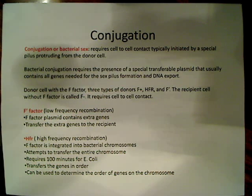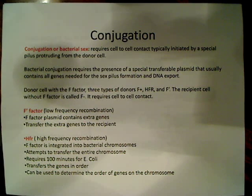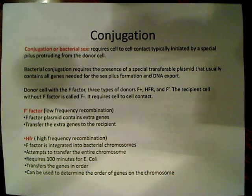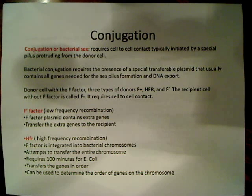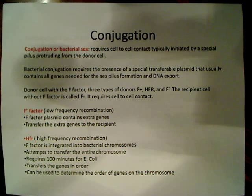I want to talk briefly about the F-prime factor. That's what's known as low-frequency recombination. The F-factor plasmid contains extra bacterial genes specifically. So they transfer these extra genes to their recipient — to whatever cell is receiving the genetic material, it's also going to receive some extra genes from the bacterial cell.